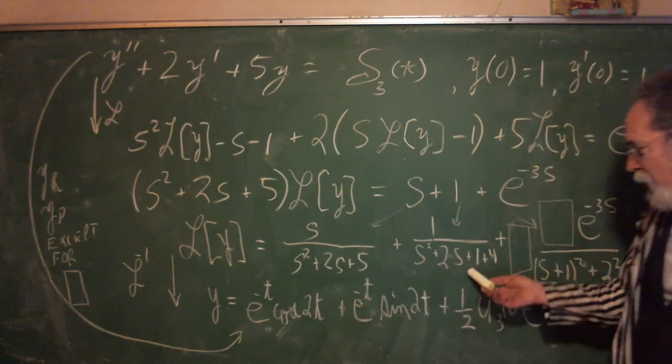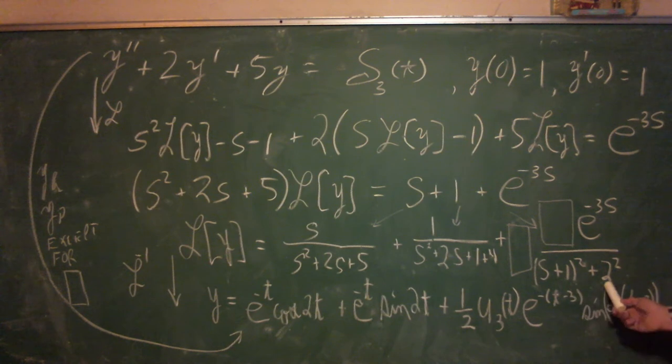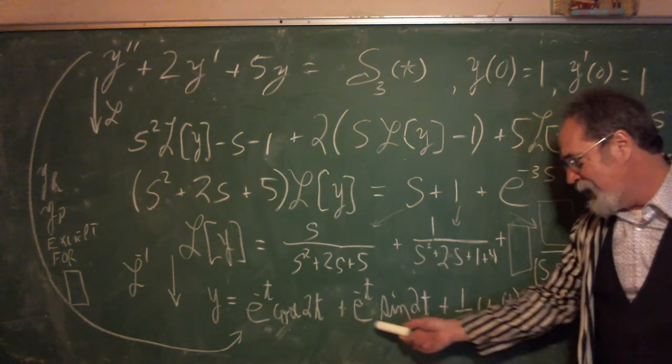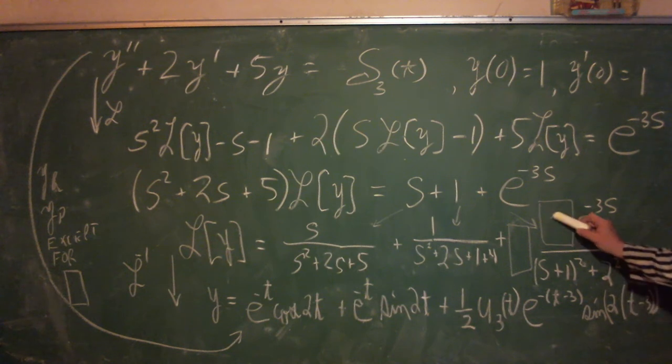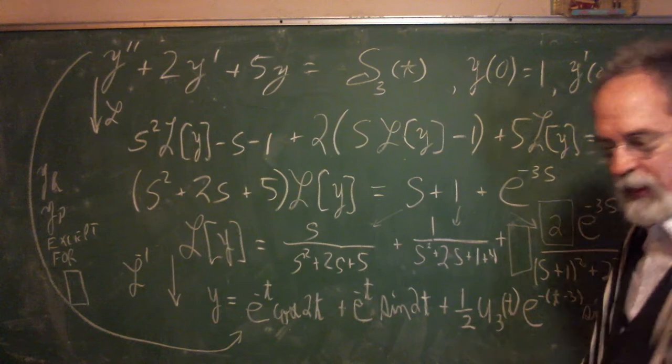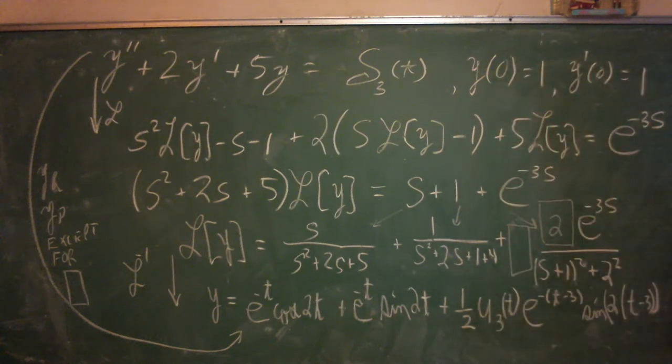This guy here, when you rewrite the bottom as s plus 1 squared plus 2 squared, you get exactly e to the negative t sine 2t. This guy, you got to think about it. This guy, I need to be able to do its inverse Laplace transform. And what's funny is for this structure, if you look on the table, you need an omega, you need a 2.